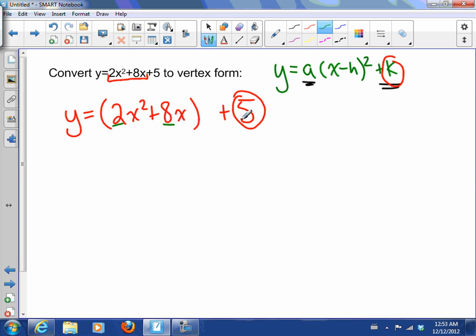The next part is I want to factor out that 2 because this x doesn't have anything in front of it. So what I want to do is take that 2 out: 2(x² + 4x) + 5. Notice that since I put this in brackets, now when I factor the 2, I'm not factoring it from the 5 anymore because this is in brackets.